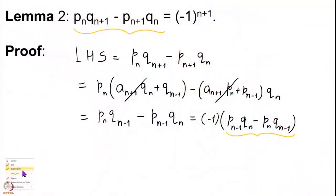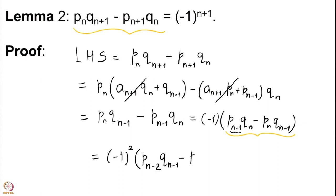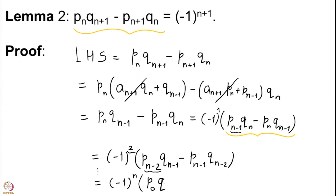After cancellation we are left with p_n * q_{n-1} minus p_{n-1} * q_n, which with a sign change gives minus(p_{n-1} * q_n minus p_n * q_{n-1}). This formula is similar to the original except that n and n+1 are replaced by n-1 and n. Continuing this way we get (-1)^2, then n keeps reducing, and we continue until we reach (-1)^n.